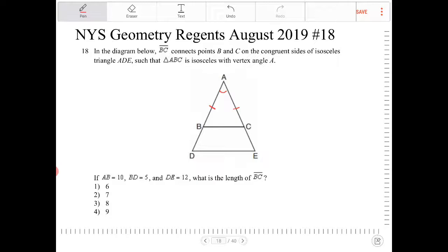And we also recognize that the side length AD is going to be congruent to side length AE. So these two side lengths are also going to be the same.